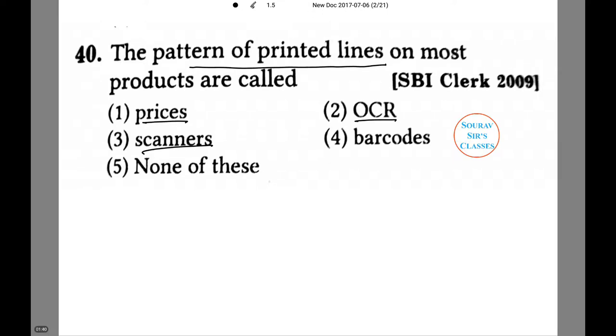And lastly, barcodes, which is the correct answer since barcodes contain information about the company, about the manufacturing date, the prices, and all other related information of each and every product.